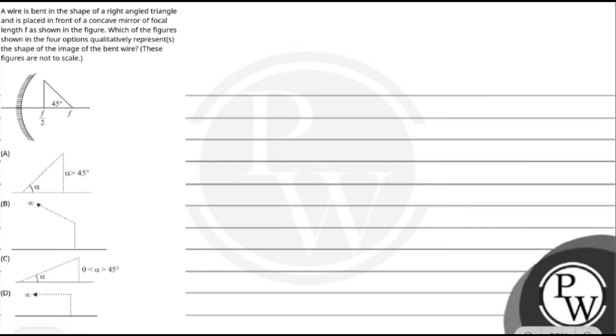Which of the following figures shown in the options qualitatively represents the shape of the image of the wire? These figures are not to scale and our options are given. So the key concept used here is image formation in concave mirror.